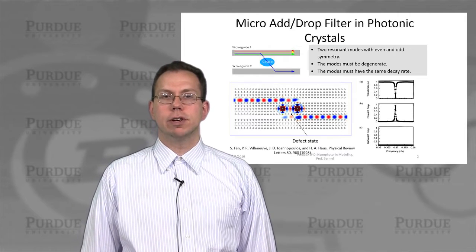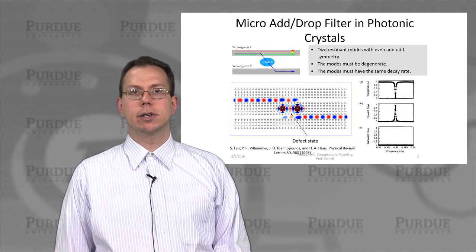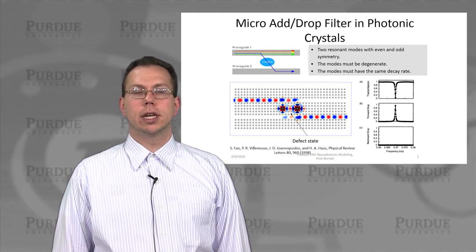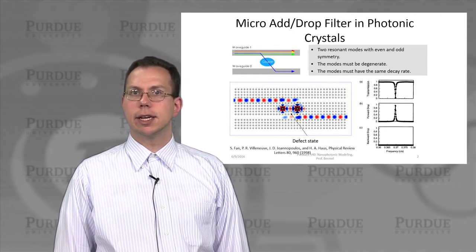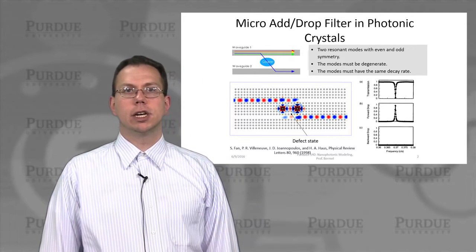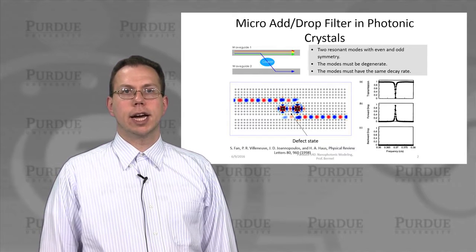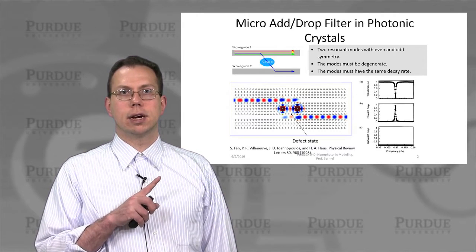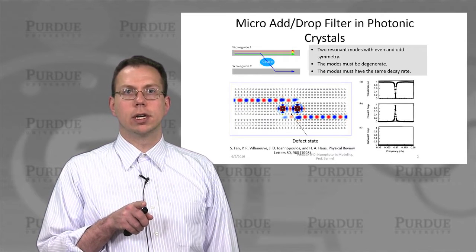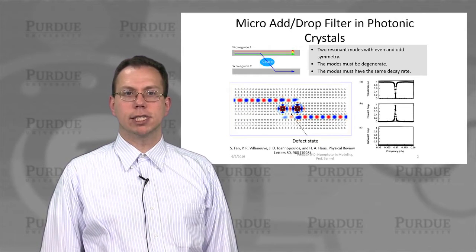The first type of 2D photonic structure that's really unique and interesting and may have some practical applications is the so-called micro add-drop filter. In telecommunications, light is often sent as a combination of different wavelengths in fiber optics. Sending light down multiple wavelengths at once allows you to convey much more information than at a single wavelength alone, and that's known as wavelength division multiplexing.